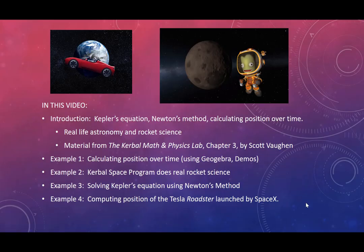In this video, we'll start with an introduction: what is Kepler's equation and Newton's method? The general topic will be the algorithm we go through in calculating position over time in an elliptical orbit. This is real-life astronomy and rocket science, and the material I'm presenting is from the Kerbal Math and Physics Lab, Chapter 3 — a workbook on rocket science and astronomy that I've written.